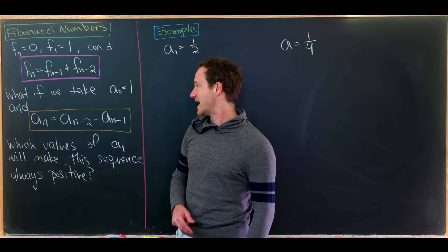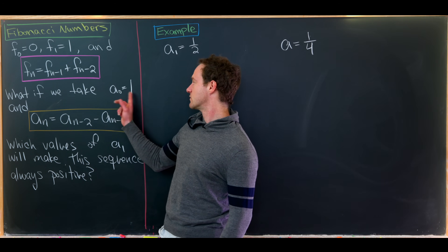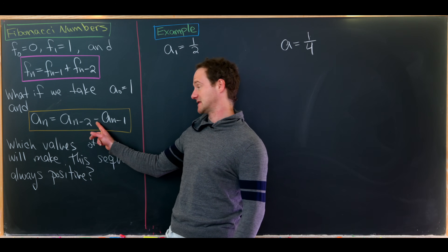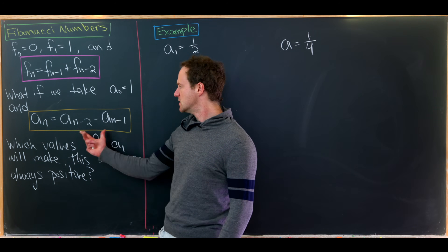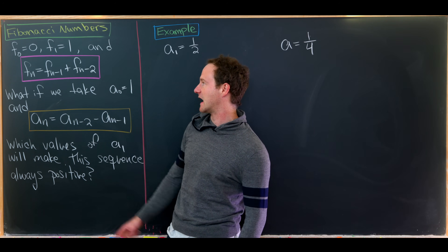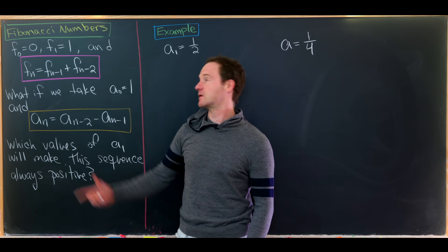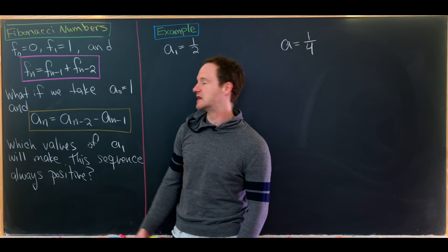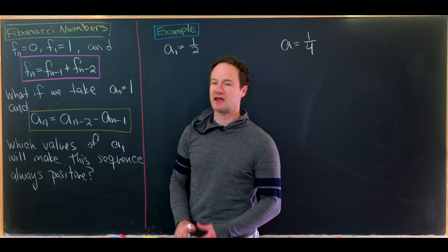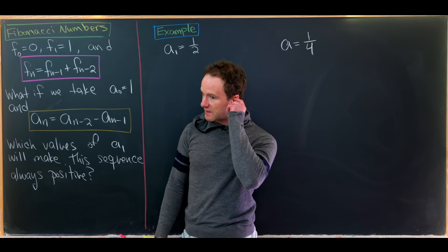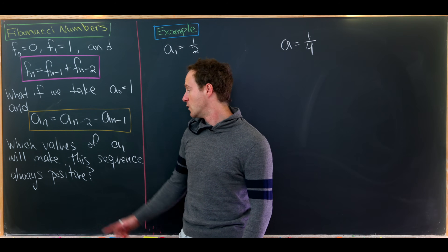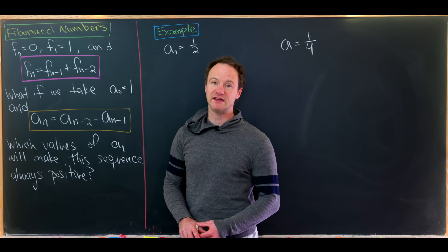What we'd like to do today is take a_0 to be one and then define the recursion with a minus sign instead of a plus sign. This is the same two-step recursion but we're subtracting instead of adding. In particular, a_n = a_{n-2} minus a_{n-1}.